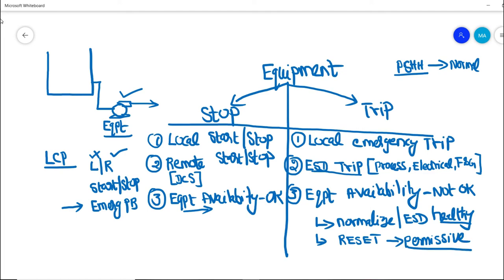Once the reset is done, we have the permissive to start this particular equipment. So now you have seen that equipment stop and equipment trip are not the same — both are different. In a stop condition, a pump or any equipment can be started and stopped any number of times and the equipment availability will always be okay. But in a trip condition — whether a local emergency push button trip or an ESD trip — the equipment availability becomes not okay. We must normalize the ESD, make it healthy, and then perform a reset, after which the trip gets normalized and we can start the pump again.